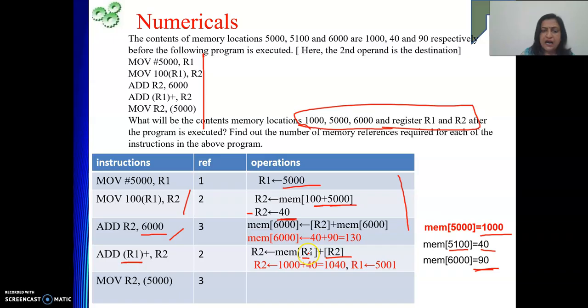So R2 equal to what? Memory location R1's content plus R2. So already I explained. R1 is holding 5000. So 5000's data is 1000. So this is 1000. What is R2's content? 40. Already we have seen. So this is 40. So 1000 plus 40 will give you 1040. Plus along with this, you need to write R1 equal to 5001 because default value for increment, we are using 1.